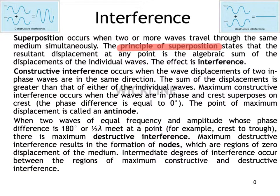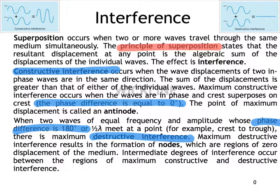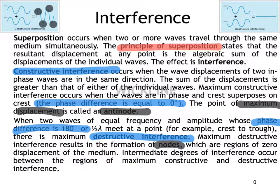To summarize: constructive interference occurs when two waves are in phase with each other, so the phase difference is zero. Destructive interference happens when the phase difference is 180 degrees. Two more vocab words: antinodes and nodes. An antinode is a place where you have maximum displacement — here, here, here, or there. A node is a region of zero displacement; you can find nodes all along the wave at the equilibrium line.